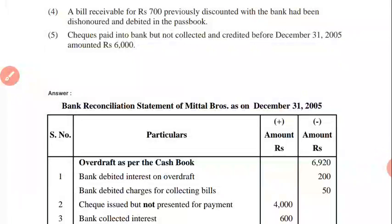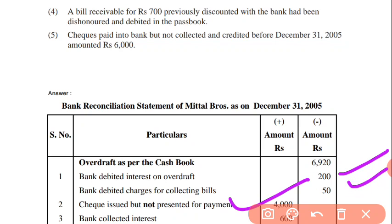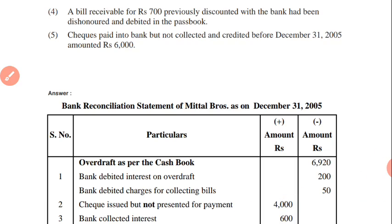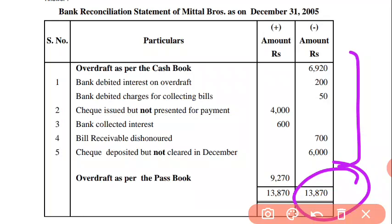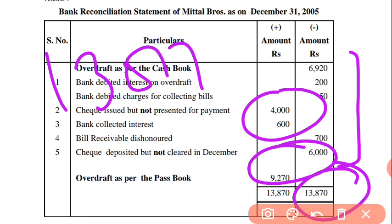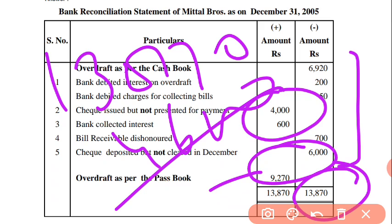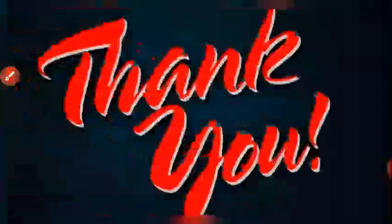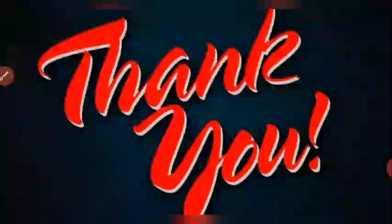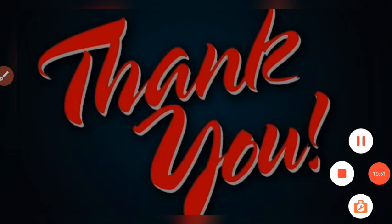6,920 — credit balance tha, minus ho jayega — overdraft. Overdraft pe charges the, collecting bill ke charges the — minus. Check issued but not yet presented for payment — plus ho jayega. Bank charges interest collected: 600 — plus. Total minus is coming 13,870 and overdraft is 9,270. 13,870 minus 400 — you get 9,270. Overdraft was in the beginning from cashbook, so here it will be from the passbook. Pause this video and note down. I hope aapko yeh saare questions samajh mein aa gaye. Thank you students — like kariyega aur friends ke saath share kariyega.